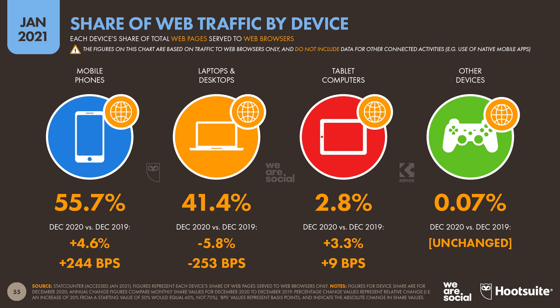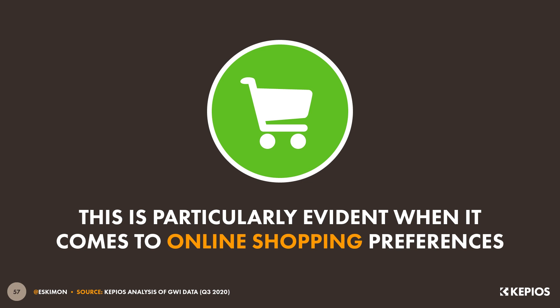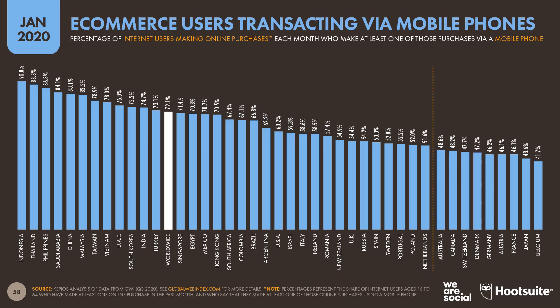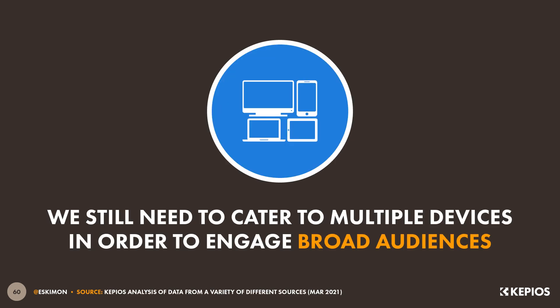Other data support this relative device balance too. StatCounter's latest insights into global web traffic show that mobiles accounted for roughly 56% of worldwide web page requests in December 2020, but that other devices still accounted for more than 44% of global web traffic. And what's more, people in a number of more developed economies are still more likely to default to using a computer to go online than a mobile, especially when it comes to their online shopping activities. There are nine countries around the world where fewer than half of the people who made online purchases in the past month made at least one of those purchases via a mobile phone. So the clear takeaway here is that mobile first does not necessarily mean mobile only.